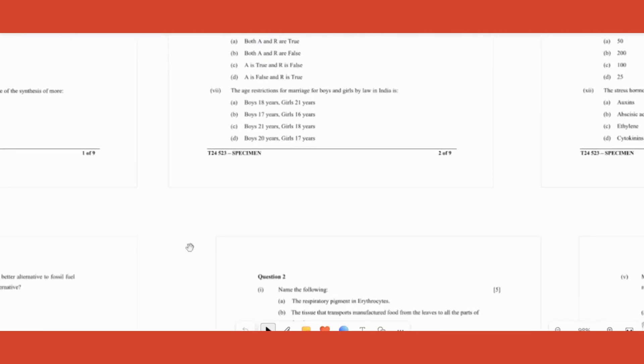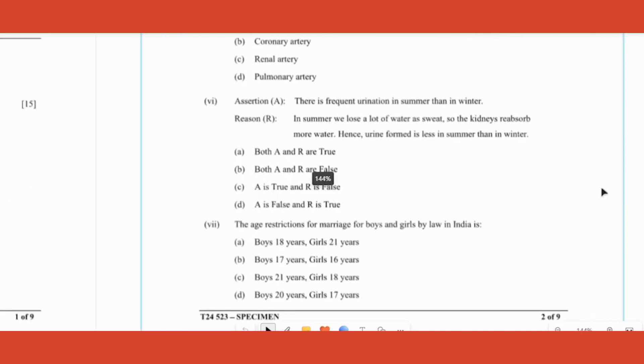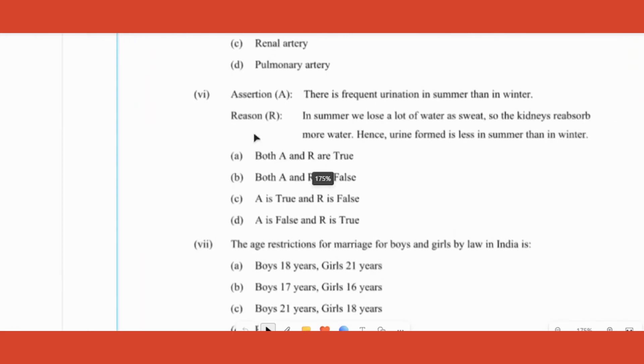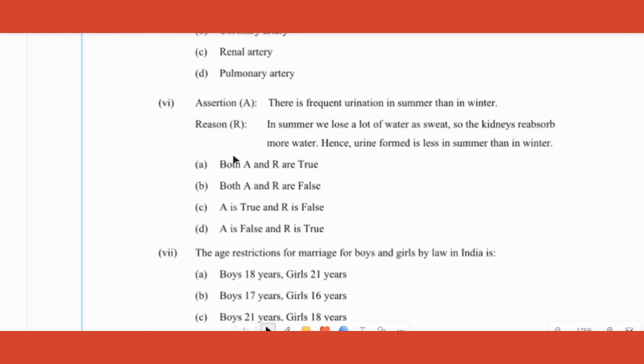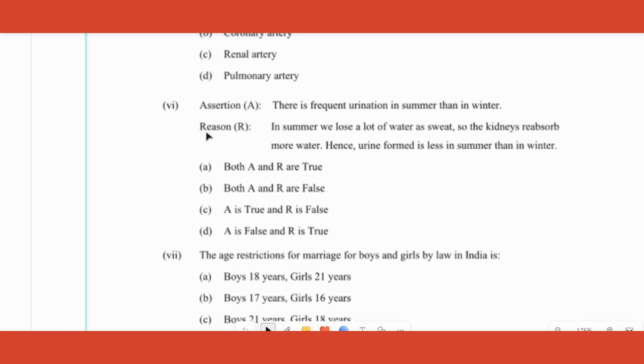Another extra guest that we are having in ICSE pattern is assertion-reason questions. Those who are aware of CBSE pattern, this is a regular question in CBSE pattern. Assertion-reason questions are like a statement is given as assertion and a reason is given as reason. Both are two statements. First and foremost, you have to check whether the statement is correct or not.